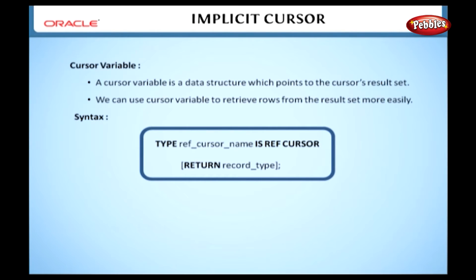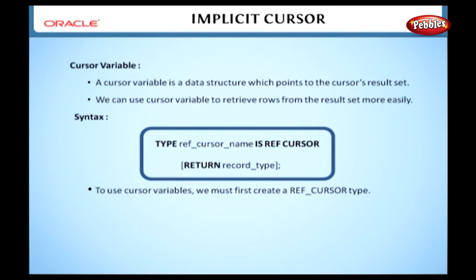In this section we are going to discuss cursor variables. A cursor variable is a data structure which points to the cursor's result set. We can use a cursor variable to retrieve rows from the result set more easily. The syntax for creating a REF cursor type is: TYPE ref_cursor_name IS REF CURSOR RETURN record_type. To use cursor variables we must first create a REF cursor type. This defines that a query will return some rows at runtime.